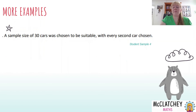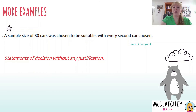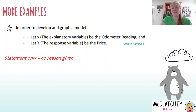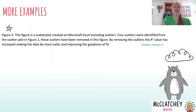Another example: 'A sample size of 30 was chosen to be suitable with every second car chosen' — there's no reason given here, just a statement of a decision with no justification at all. And another: 'In order to graph and develop the model, let x be the odometer reading, let y be the price' — once again just a statement, no reason given as to why they made that decision.